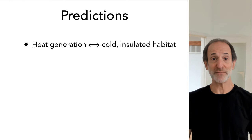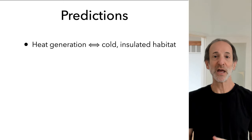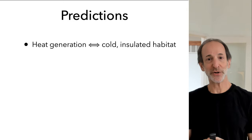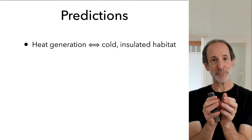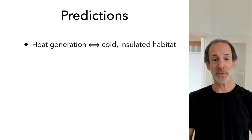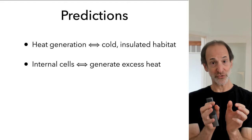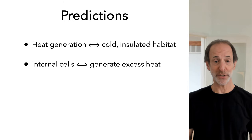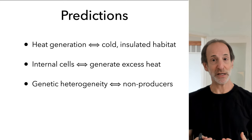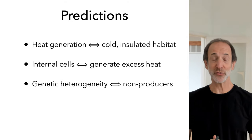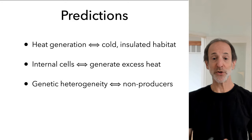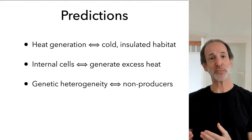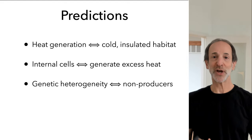We can make some predictions about the cooperative use of metabolic heat. Heat generation is more likely in cold habitats, where raising temperature is more beneficial. Insulated habitats like soil are particularly good candidates because heat can be captured rather than diffusing away. Internal cells are more likely to generate excess heat than external cells in an aggregation. And the greater the genetic heterogeneity, the more likely there will be non-producers. This is a typical kin selection argument for public goods: the lower the genetic relatedness among individuals, the more likely some will be non-producers or cheaters.